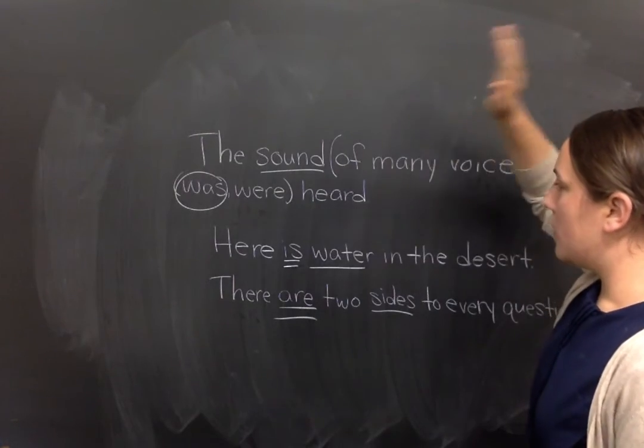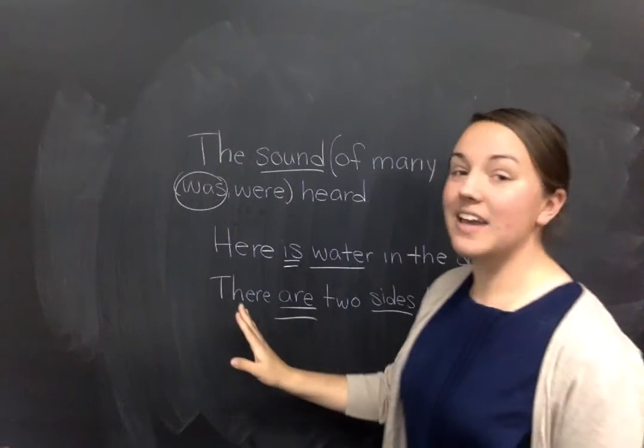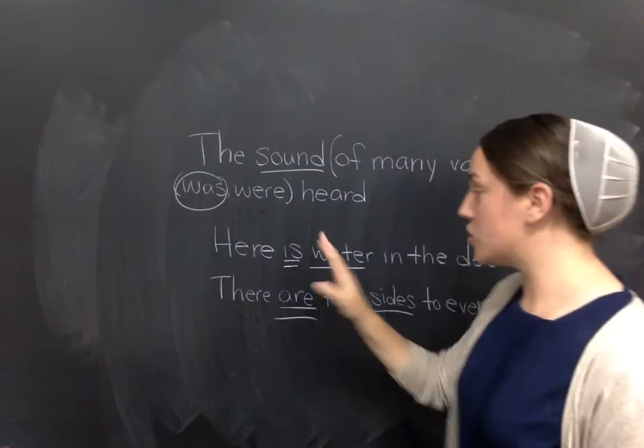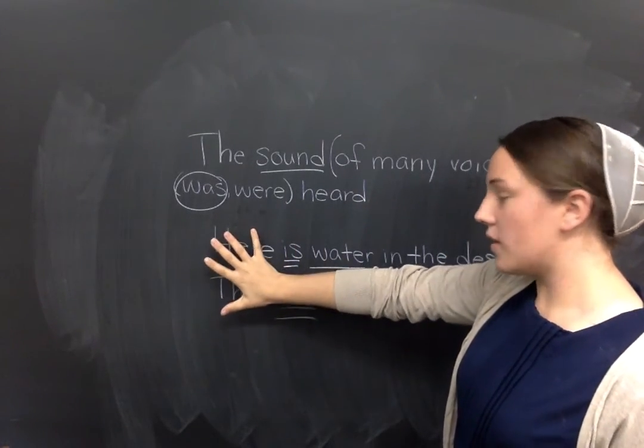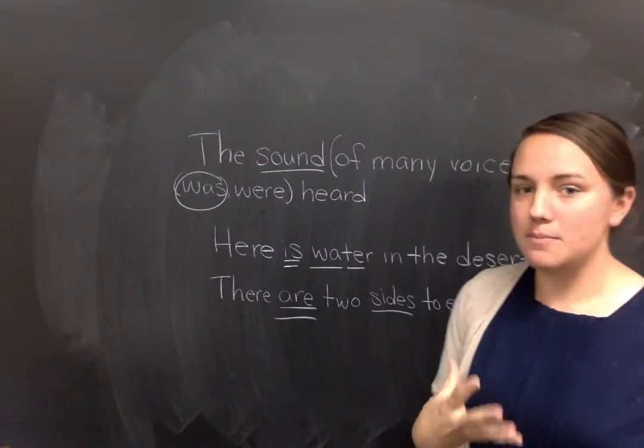So, be careful. Make sure your subject and verb agree. Do not worry about the prepositional phrase. Here and there cannot be subjects. And make sure, if they're there, remember they're not subjects. Remember to make your subject and verb agree, even if it comes after the verb.